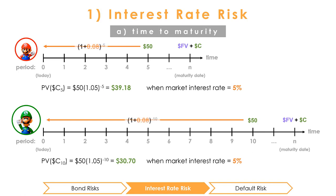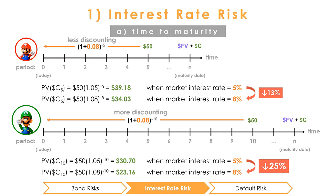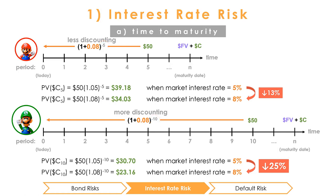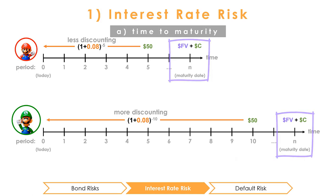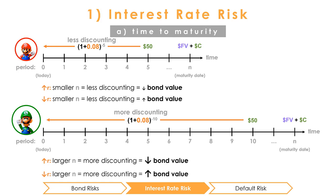If the interest rate jumps to 8%, the present value of the fifth-year coupon falls to $34.03 and the 10th-year coupon falls to $23.16. The value of the fifth-year coupon fell 13%, while the value of the coupon in year 10 fell 25%. That's because for each additional period you're dividing by another (1 + r), so when r increases the value of each coupon decreases n times over, with n being the number of periods from today. Most of the value of a bond investment comes from the big principal payment at the very end, so the longer the term of the bond, the more the value of the principal payment — and thus the entire bond — will fall as interest rates increase. Of course, investors also stand to benefit from rate changes in the other direction.